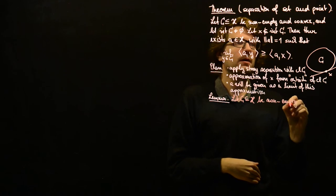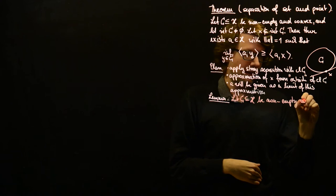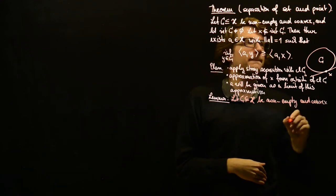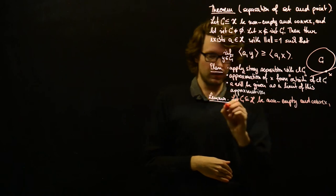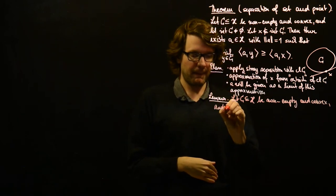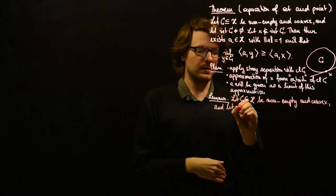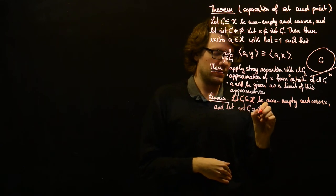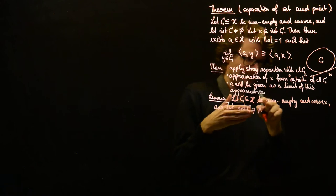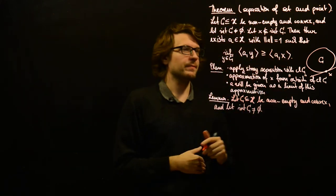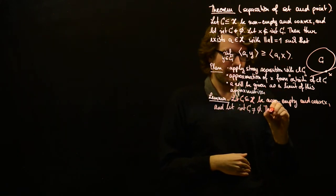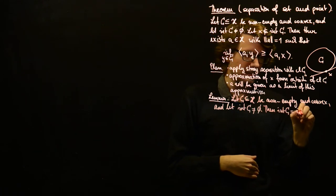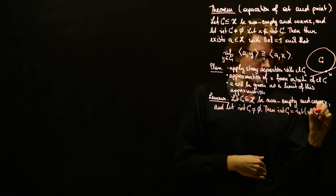Whenever X is not in the interior of C, we also want X not to be in the interior of the closure of C. We will show that in our setting the interior of C equals the interior of the closure of C, which means when we approximate we avoid not only points in C but also points in the closure of C. So: let C be non-empty and convex with non-empty interior. Then the interior of C equals the interior of the closure of C.